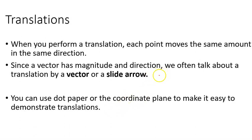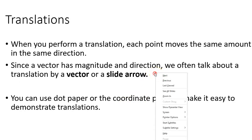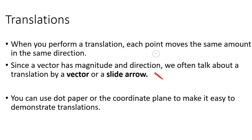We talk about a translation by a vector or slide arrow. So if I want to move something three units down and three units to the right, I draw an arrow in that direction — that vector tells me not just in what direction it's going, but how far it moves. Dot paper is helpful, as is a coordinate plane, because you don't have to measure things as much with protractors. At the beginning, it's probably easier to learn and demonstrate on dot paper.